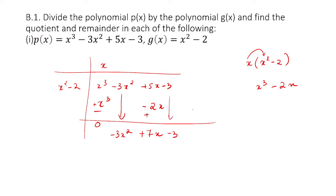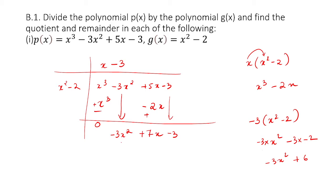Now, what should you multiply x squared with to get minus 3x squared? You should multiply x squared with minus 3. So when you multiply minus 3 with x squared minus 2, you get minus 3x squared, and minus 3 into minus 2 gives plus 6. The signs change, so minus 3x squared cancels, and 7x minus 3 minus 6 becomes 7x minus 9. We can no longer proceed because the remainder has degree of x only, while our divisor is x squared, so you cannot multiply further.